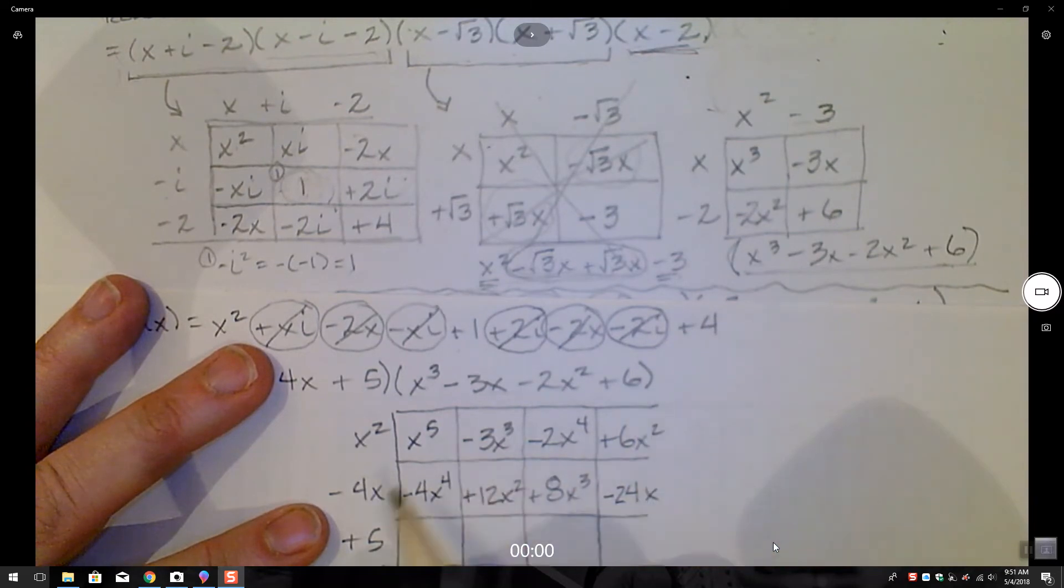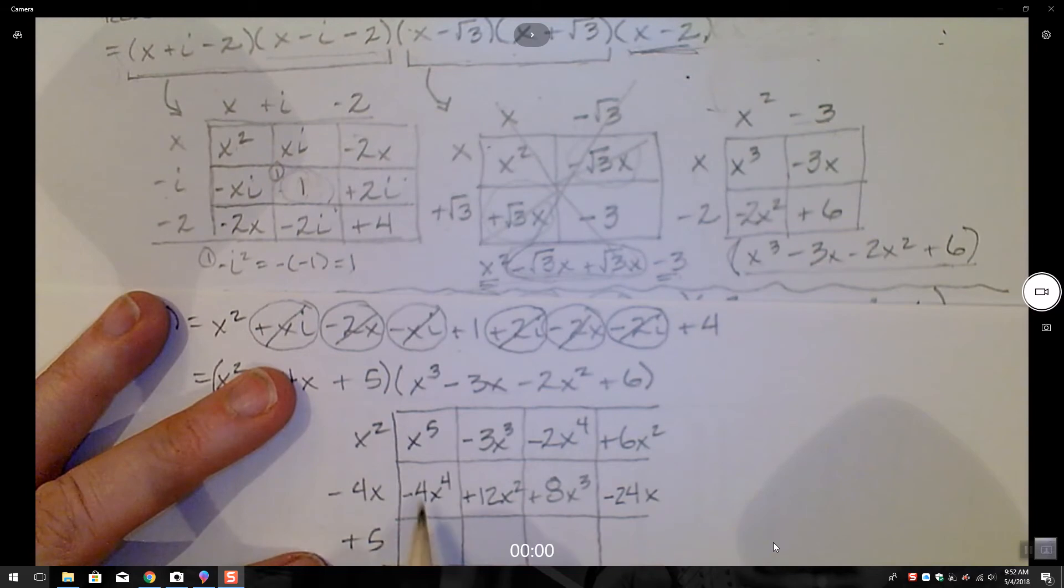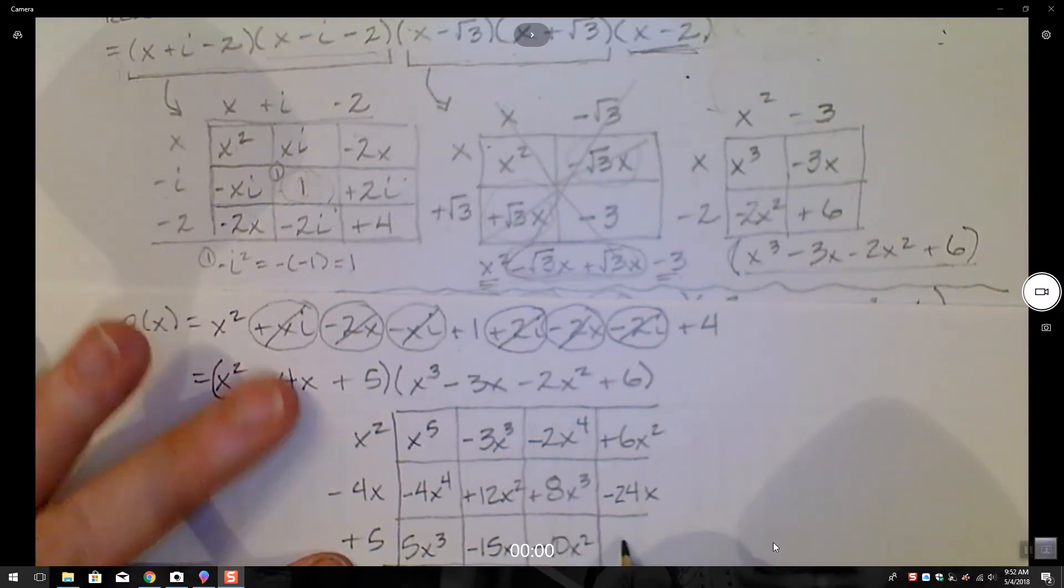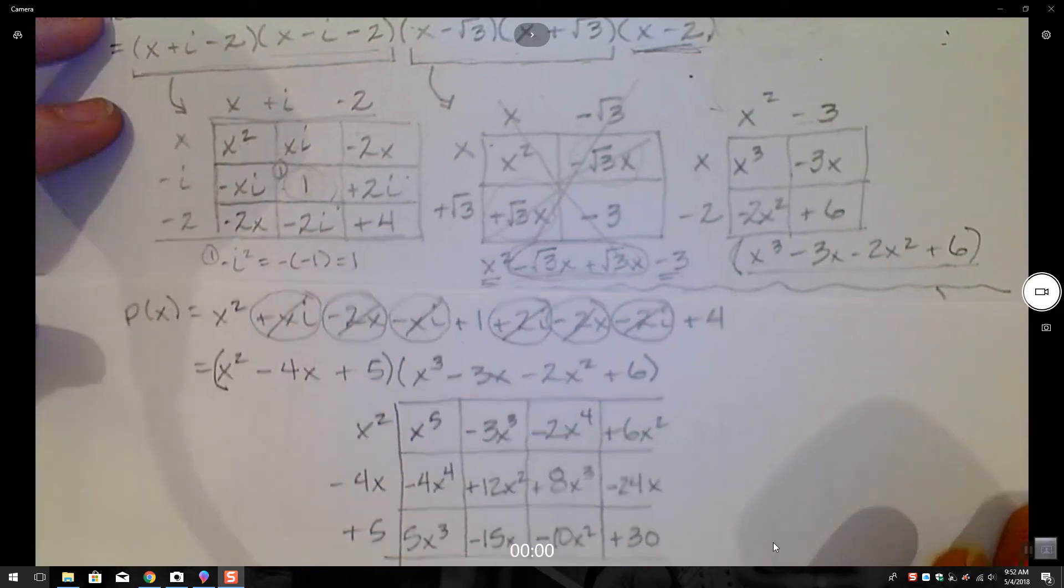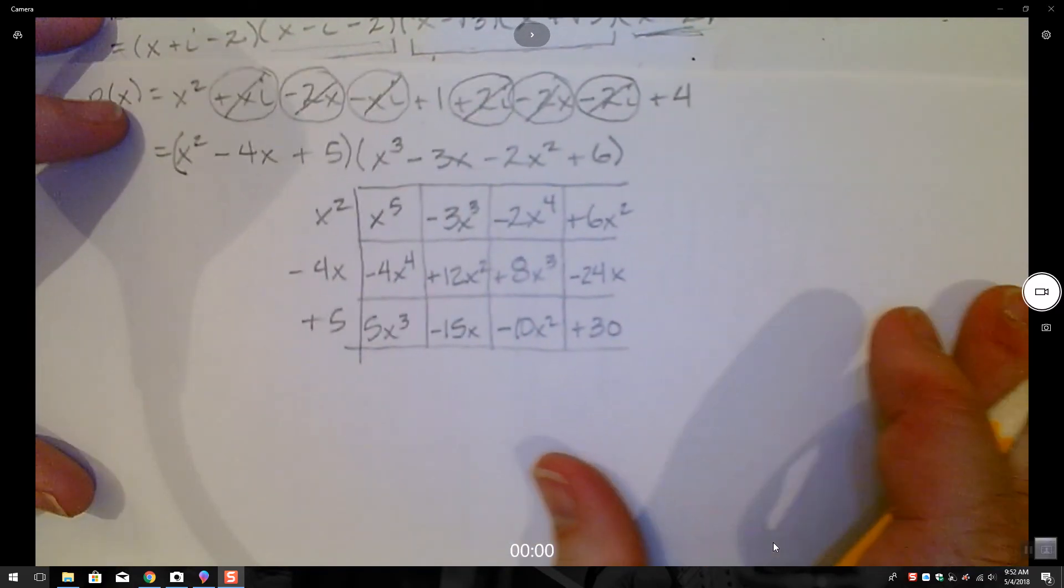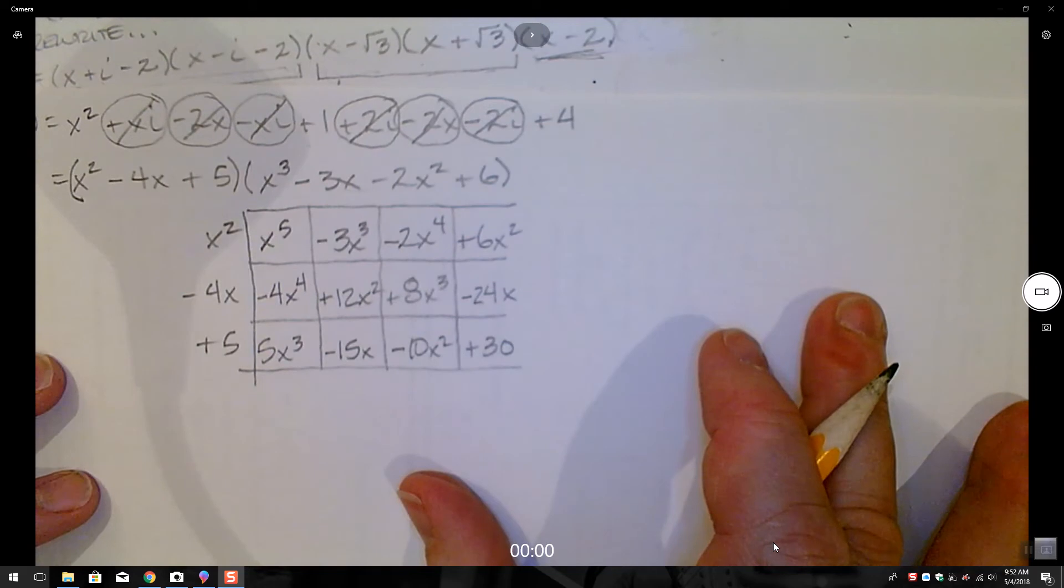Right? 6 times negative 4 is negative 24x. And then I have a 5x to the third and a minus 15x and a minus 10x squared and a plus 30. So I'm going to have the unsimplified version of this is going to be pretty long.